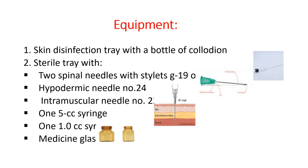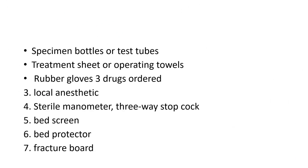What equipment is needed? The skin disinfection tray, a bottle of colloidal solution, a sterile tray with two spinal needles of gauge 19, a hypodermic needle number 24, an intramuscular needle, a 5cc syringe, a 1cc syringe, and a medicine glass. Also specimen bottles to collect cerebrospinal fluid, treatment sheet or operating towels, rubber gloves, local anesthesia, a sterile manometer, a 3-way stopcock, bed screen, bed protector, and fracture board.